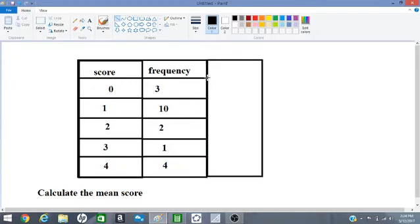And this column would have the score multiplied by the frequency. So score is sometimes given the variable x, frequency is sometimes given the variable f. And so this column will be x multiplied by f.